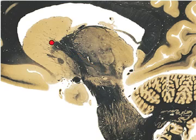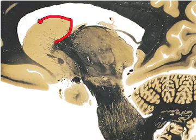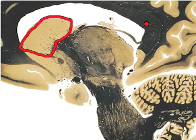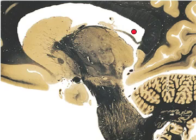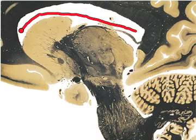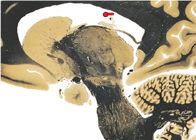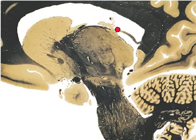Right here we have the caudate nucleus. Up here we have the lateral ventricles. And of course we have the choroid plexus, which is responsible for creating CSF, right here. And we have a little bit of the fornix right here.